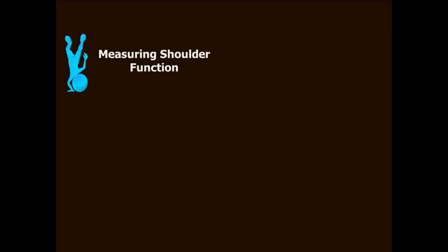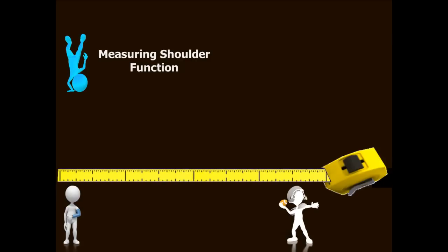Now picture a continuum of shoulder function that goes from the very lowest shoulder function to the very highest shoulder function. And in between, there are many graduated levels of function between low and high. Let's consider a sample item for measuring shoulder function. We will use the item: can you touch your earlobe with your affected arm?